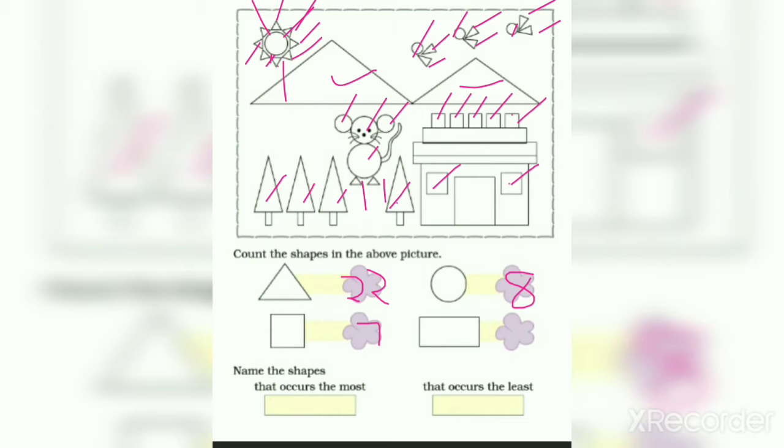Let us count rectangles. 1, 2, 3, 4, 5, 6, 7, 8, 9. Here we have 9 rectangles.